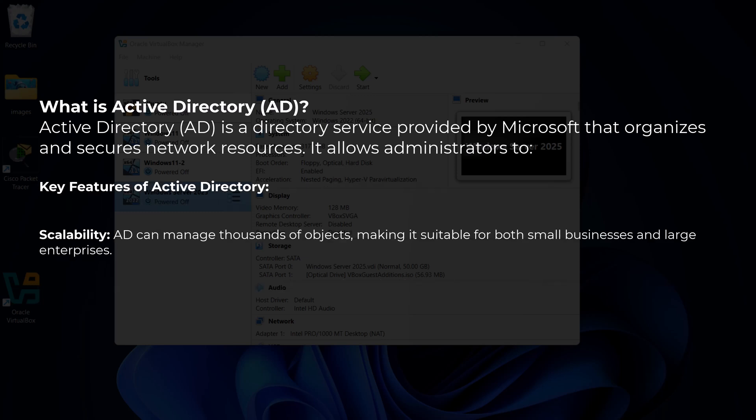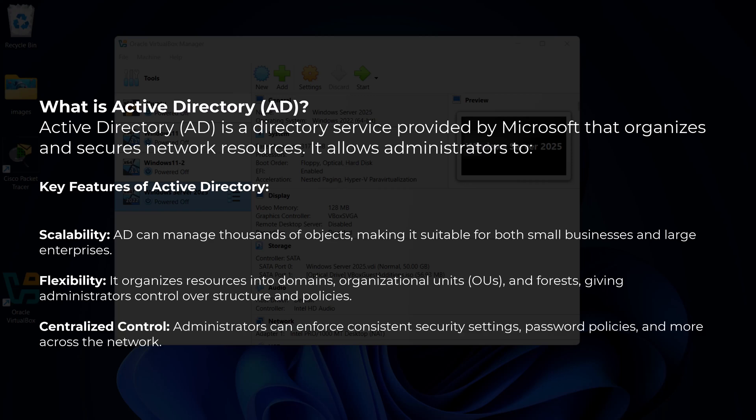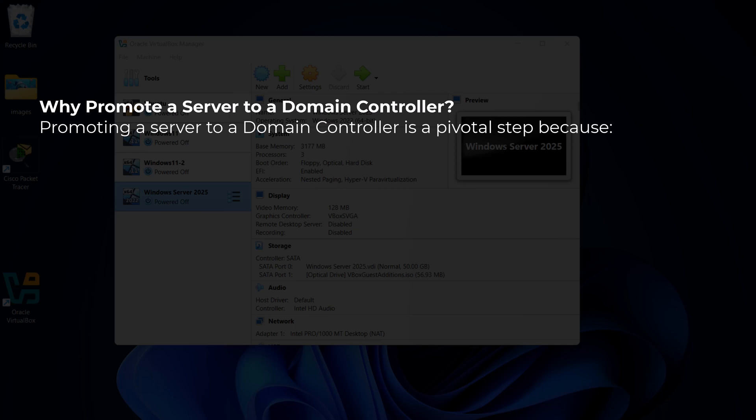Key features of Active Directory include scalability — it can manage thousands of objects, making it suitable for both small businesses and large enterprises. It offers flexibility by organizing resources into domains, organizational units or OUs, and forests, giving administrators control over structure and policies. Centralized control means administrators can enforce consistent security settings, password policies, and more across the network.